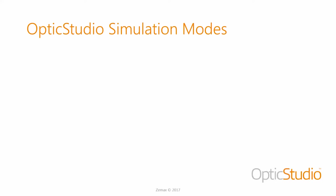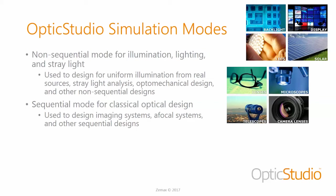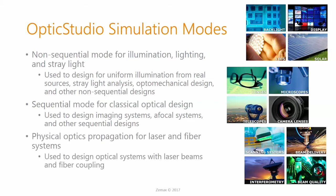I want to quickly talk about the three different simulation modes in OpticStudio. First, we have non-sequential mode, used for illumination, lighting, and stray light system design. Then we have sequential mode for classical optical design — designing imaging systems, afocal systems, telescopes, microscopes, or camera lenses — anything where there's a primary path for the light. And then we have physical optics propagation, a more sophisticated algorithm than ray tracing, which propagates a coherent wave front and can be used for simulating more sophisticated laser or fiber systems.